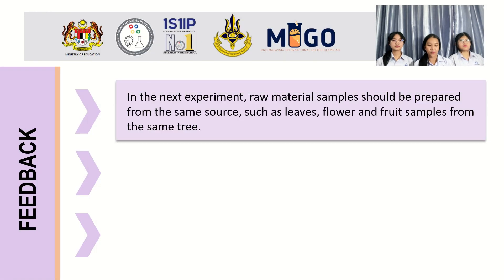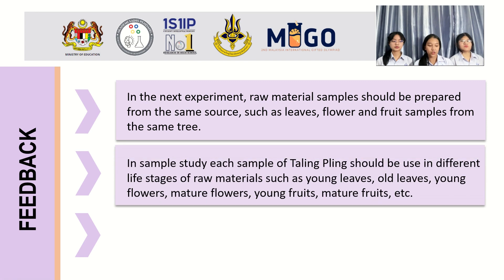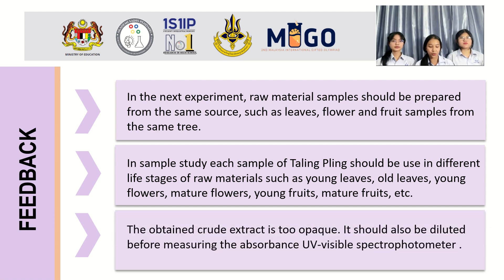Recommendation 1: in the next experiment, raw material samples should be prepared from the same source, such as leaf, flower, and fruit samples from the same tree. Recommendation 2: in further study, samples from bilimbi should be used in different maturity states of raw material, such as young leaf or mature leaf, young flower or mature flower, young fruit or mature fruit, etc. Also, the crude extract is often opaque and should be diluted before measuring absorbance with a UV-visible spectrophotometer.